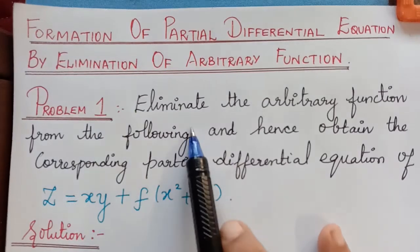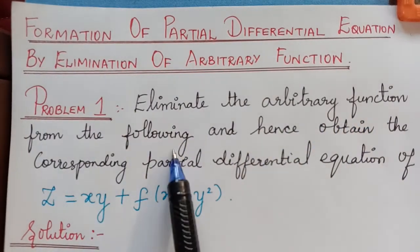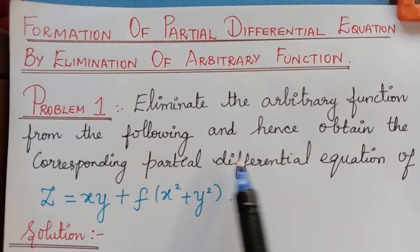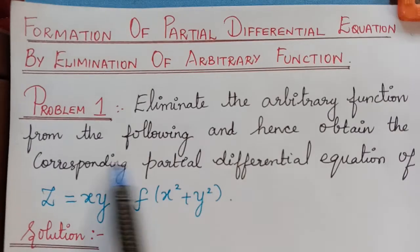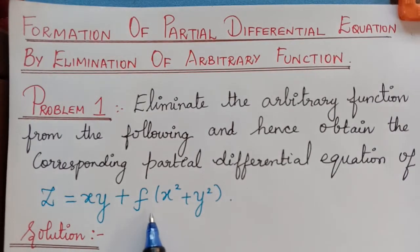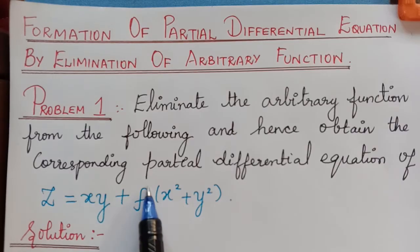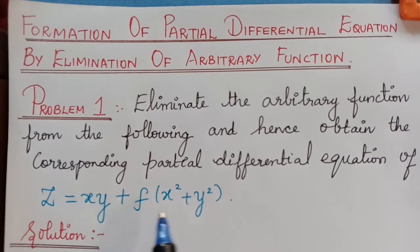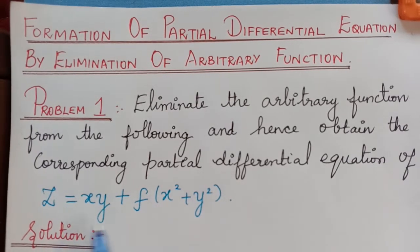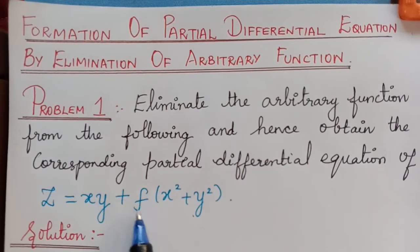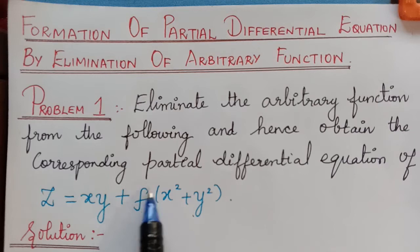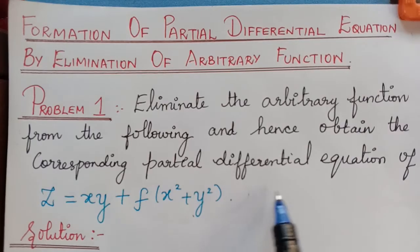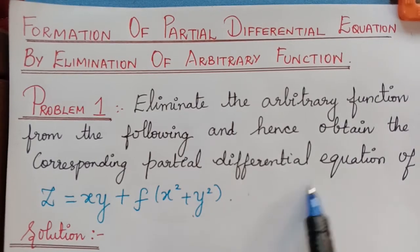The first problem is: eliminate the arbitrary function from the following and hence obtain the corresponding partial differential equation. A function is given and for this we have to eliminate the arbitrary function. So what is that arbitrary function given here? It is F. First of all we have to check how many functions are given — here there is only one function, f of x squared plus y squared. Now we have to eliminate this function and find the corresponding partial differential equation.